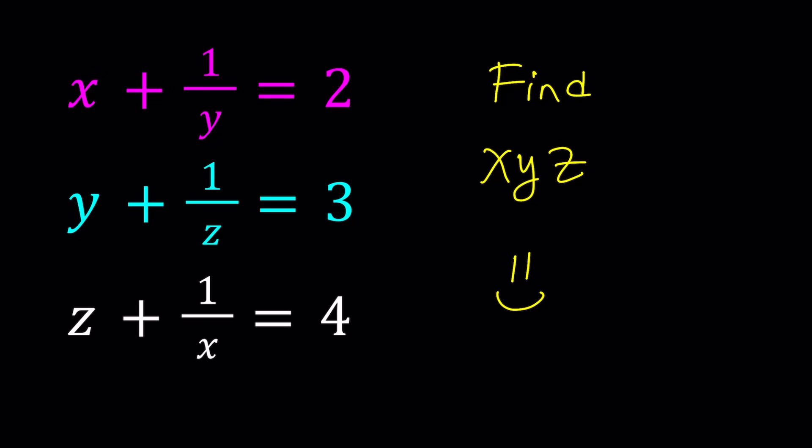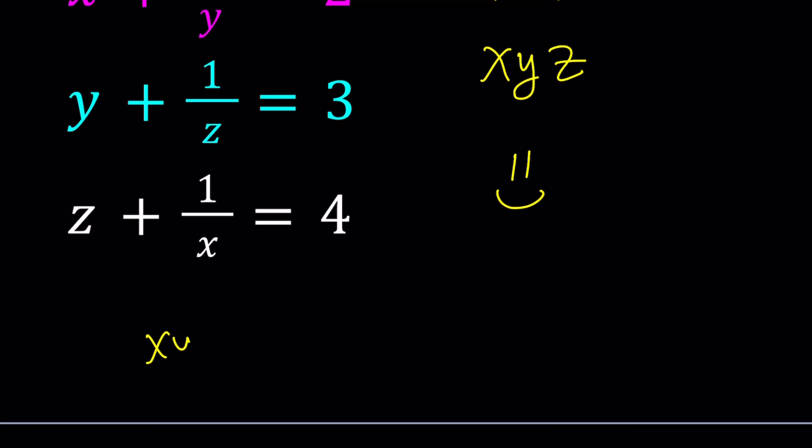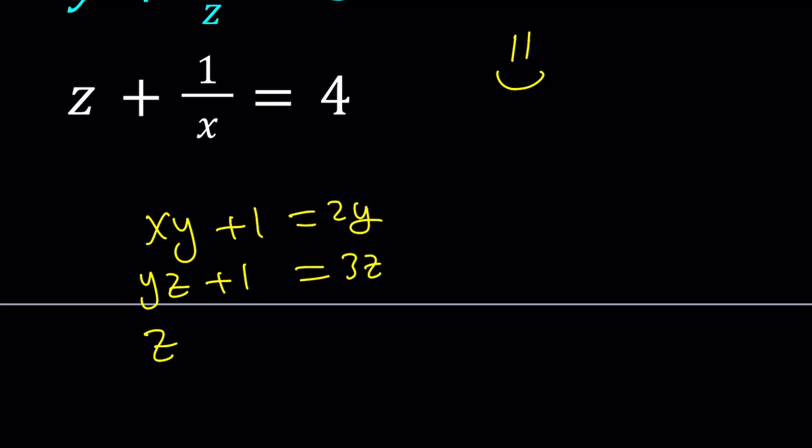But my first thought when I saw this problem was basically just make a common denominator and write three equations as polynomials. Like xy plus 1 is equal to 2y, yz plus 1 is equal to 3z, and then zx plus 1 is equal to 4x. And there's a couple different things you can do from here. You can go ahead and multiply all these equations together.